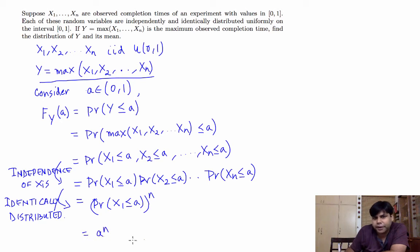So we are going to get a to the power n. Now once we know the value of the cdf, we want to find the pdf. PDF is obtained by differentiating the cdf with respect to a. So the value of the pdf will be n a to the n minus 1.